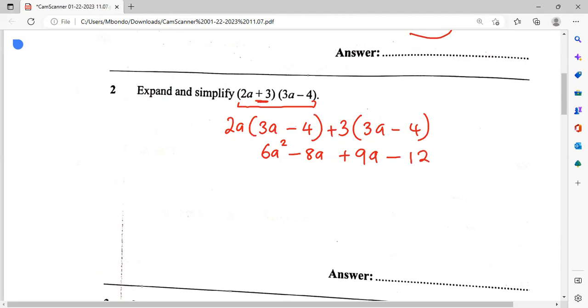Then we go down and say 6a² then we simplify these like terms together. What are we going to get? We'll get plus a minus 12. This is what is going to be our answer, ladies and gentlemen, boys and girls.